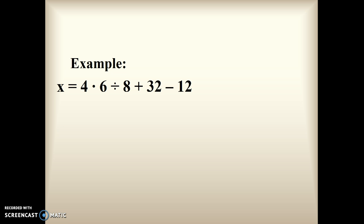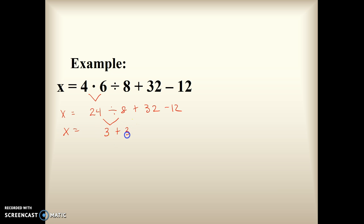Now we have a whole bunch of problems. Let's look for parentheses or exponents — we don't have either. Moving on to multiplication and division, we have both. Starting on the left, 4 times 6 is 24. Then 24 divided by 8 equals 3. Now we just have addition and subtraction, working from left to right: 3 plus 32 equals 35. Then 35 minus 12 equals 23.